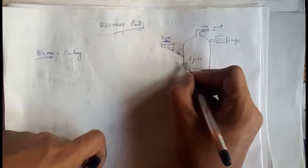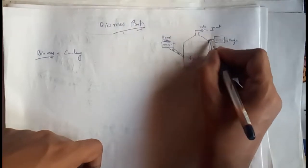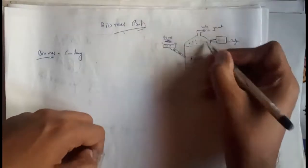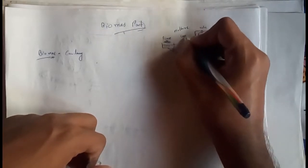What does a biomass plant do? In the biomass plant there is a digester. From here your biomass is fed in, and it fills up the tank. A reaction occurs, and then gases are formed. There are four types of gases that form from this digester.